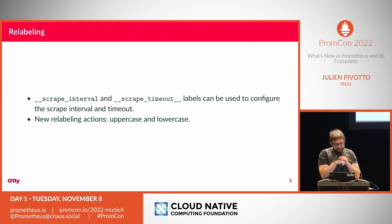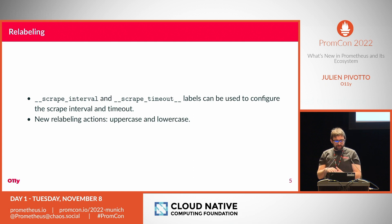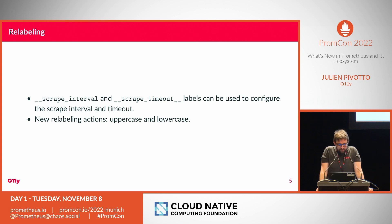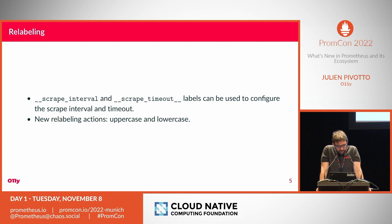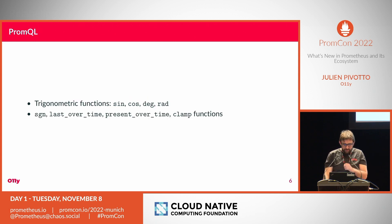When it comes to relabeling, we have added more labels you can use to configure your scrapes — mainly scrape_interval and scrape_timeout. Previously all targets in a job would use the same scrape interval, but now you can fine-tune that: for some targets based on labels you can scrape more or less frequently. There is a typo in the slide — scrape_interval has two underscores at the end. We also added new labeling actions so you can turn labels uppercase or lowercase during service discovery.